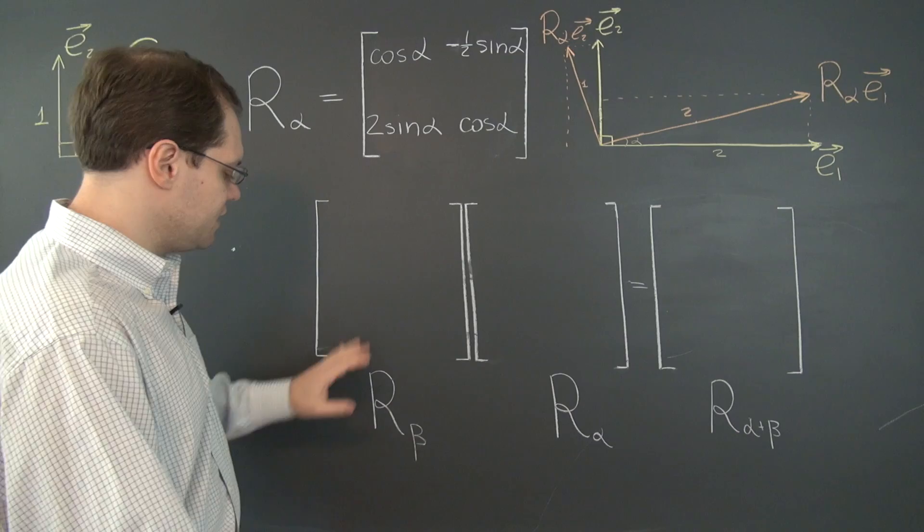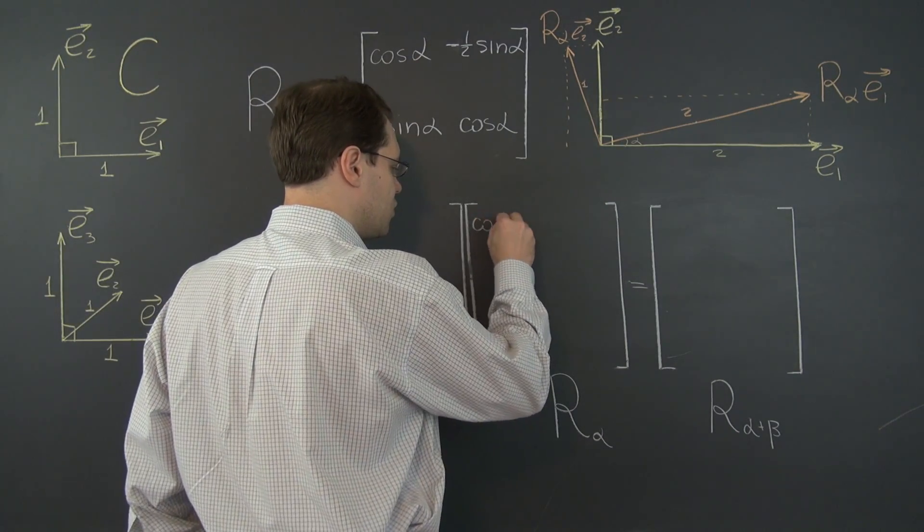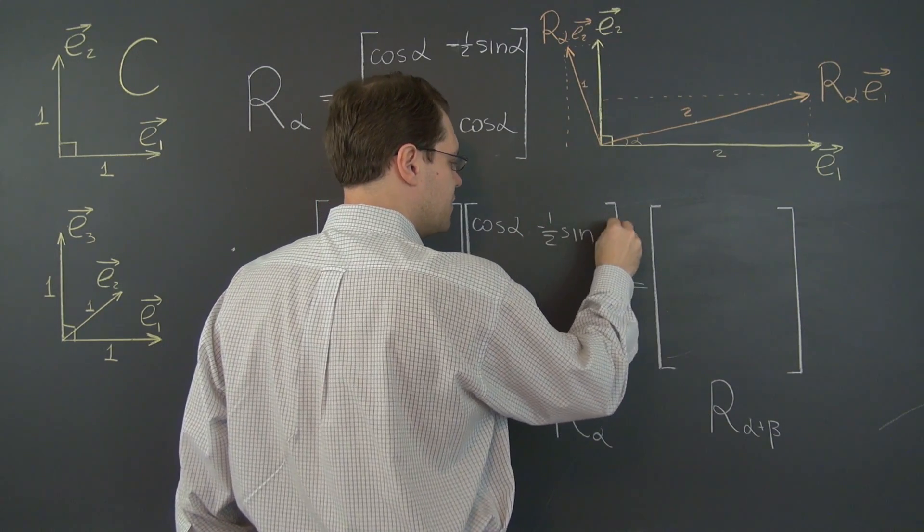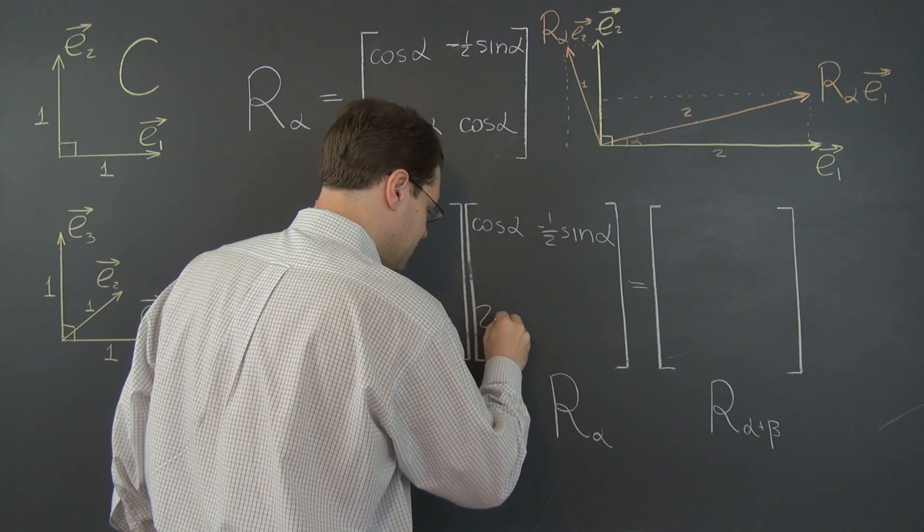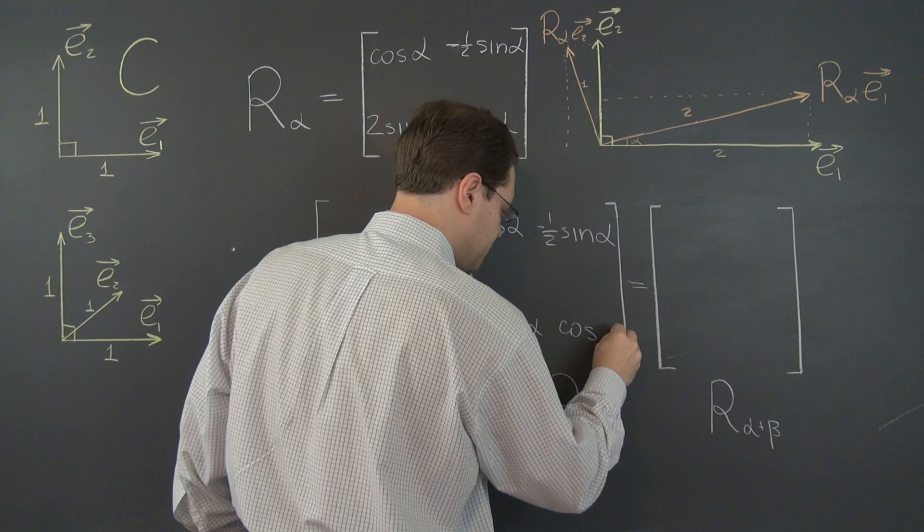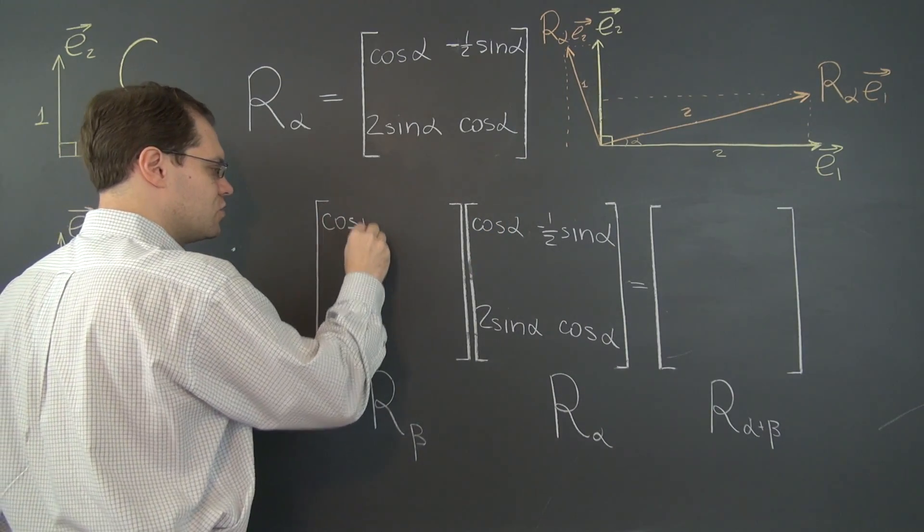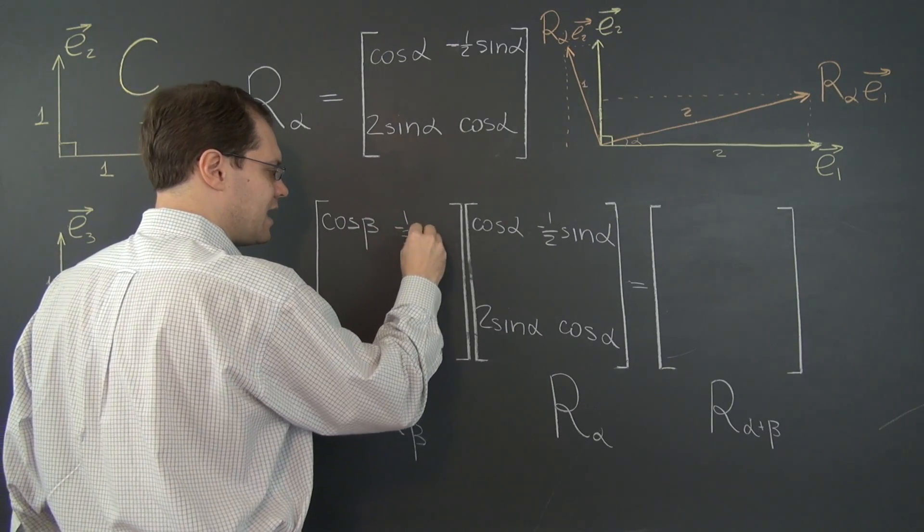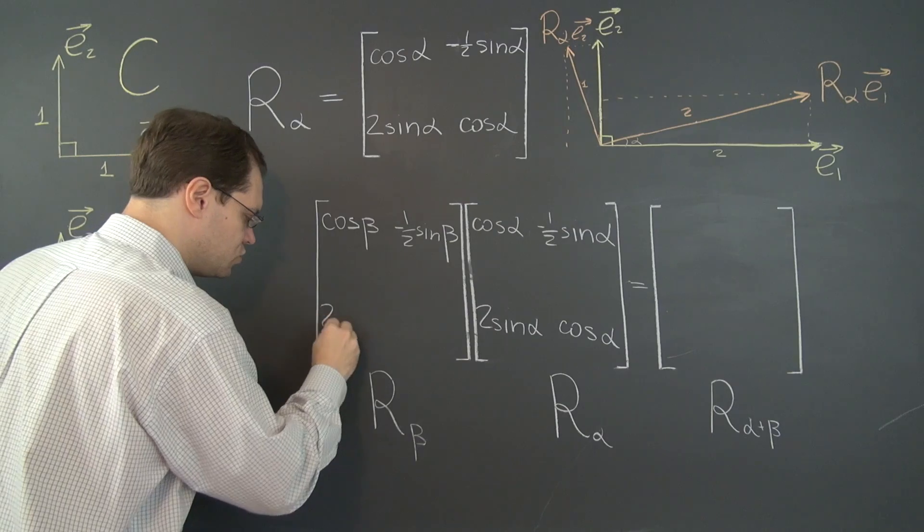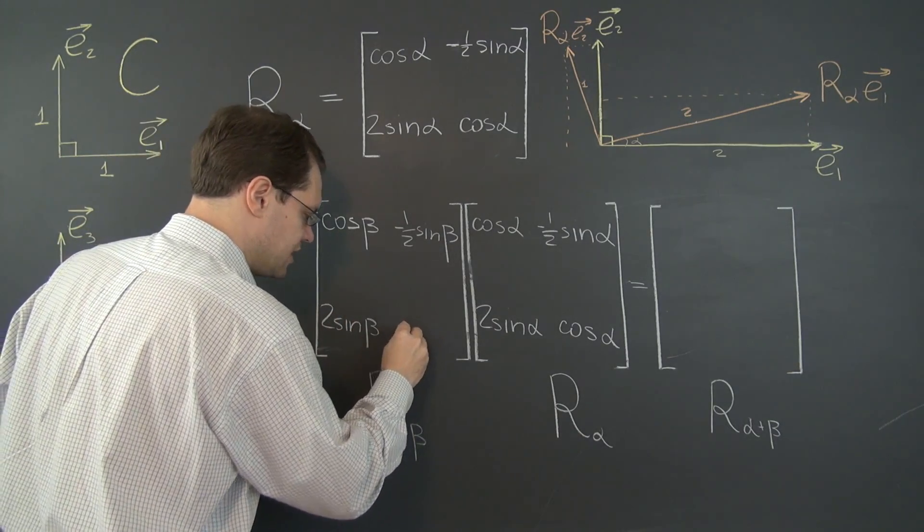Let's copy R sub alpha here and I'll put R sub beta here. So here we have cosine alpha, minus 1 half sine alpha, 2 sine alpha and cosine alpha. And here same thing with beta plugged in in place of alpha. Cosine beta, minus 1 half sine beta, 2 sine beta and cosine beta.